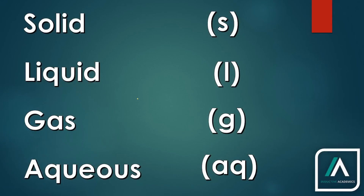Now, if we talk about determining the state, we want to know which chemical is present in which particular state. Honestly, you cannot be 100% sure about it — you can only guess it. If you don't perform the experiment, you can only guess it. There are certain things which you can memorise, and there are certain things which you can understand. In this video I am going to tell you both.